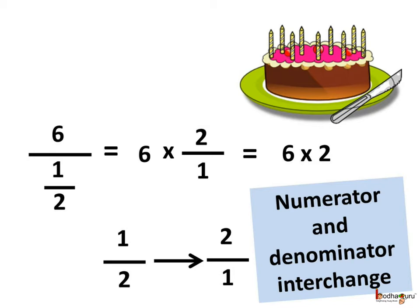Same way, 6 divided by 1 by 2 means 6 multiplied by 2. Again, we are multiplying instead of dividing. So the numerator and the denominator of the divisor exchange places and become the multiplier. Here, the divisor is 1 by 2. So when we are multiplying instead of dividing, 1 by 2 becomes 2 by 1, which is 2 only. Thus, 6 divided by 1 by 2 becomes 6 multiplied by 2, as the numerator and the denominator of the divisor have interchanged their places.